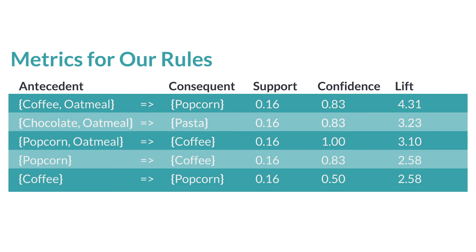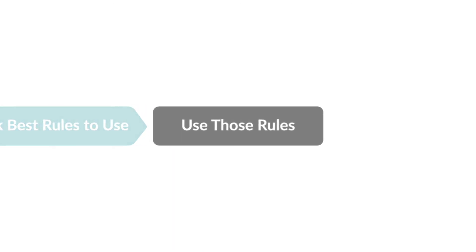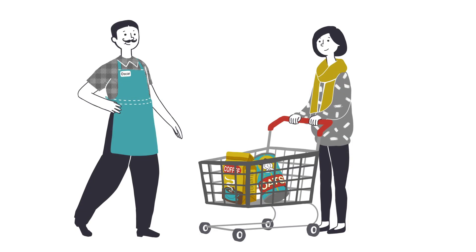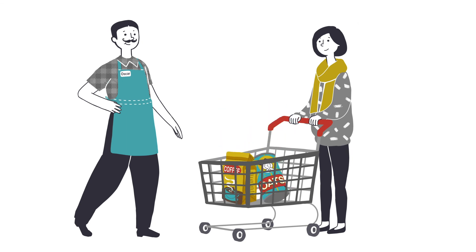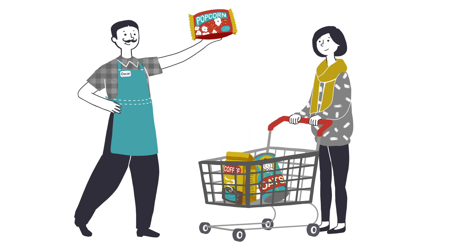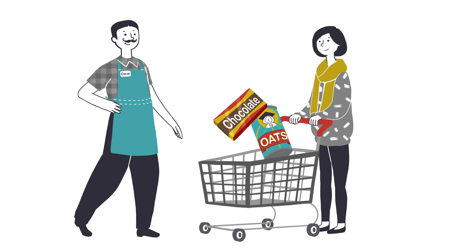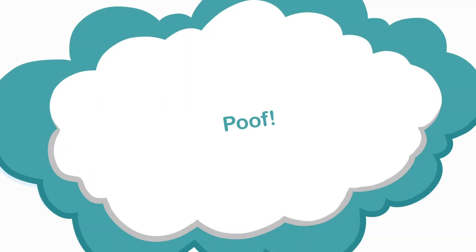Based on these parameters, our winning rules are identified. We are now at the 'use those rules' portion of our flowchart. So if you're the grocery shop and a customer has coffee and oatmeal in the shopping cart, you can recommend popcorn without hesitation. If the customer has chocolate and oatmeal, you can recommend pasta. And that's the magic.